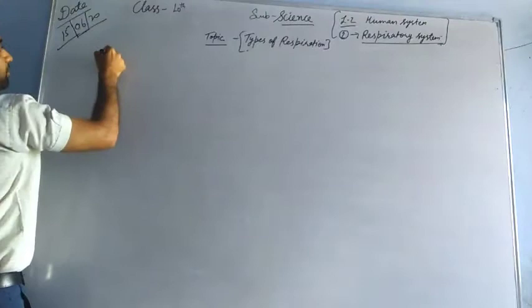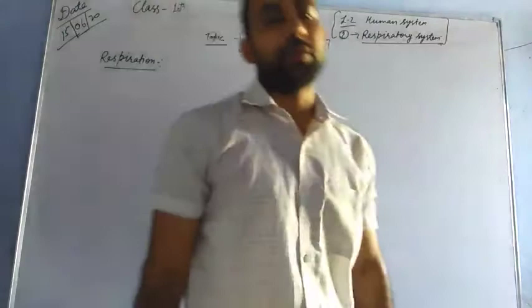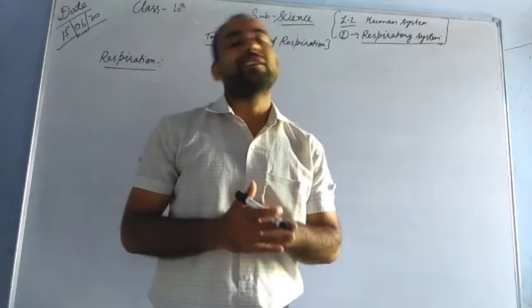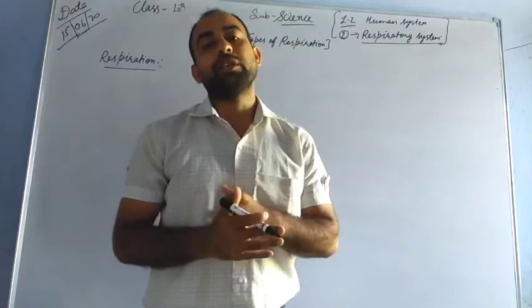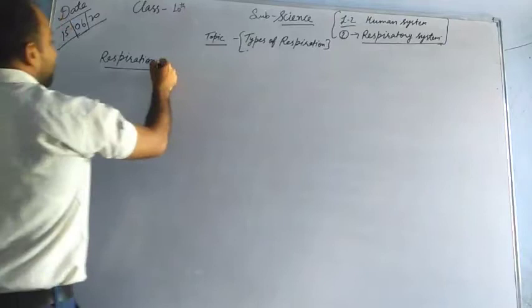The first thing is respiration, which we studied yesterday. What is respiration? Respiration is actually a catabolic process in which oxygen taken from the atmosphere is used to oxidize food inside our body and release energy. That process is called respiration. Now today I am going to tell you about the types of respiration.